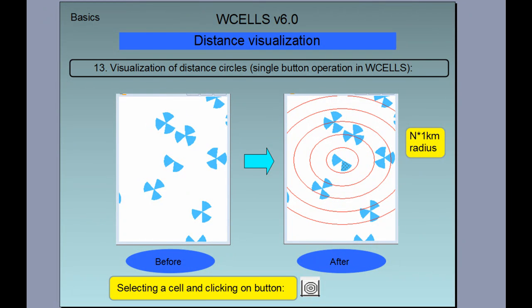With a single click, by choosing this button, we can visualize distance circles around a selected cell. Those circles are at 1, 2, 3, 4, 5, and 10 km around the cell.